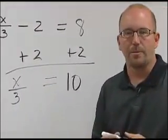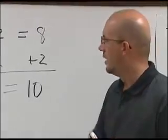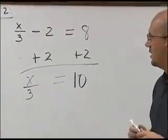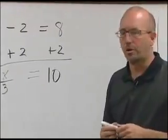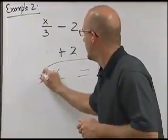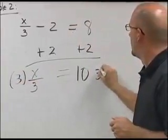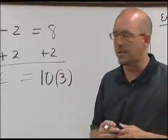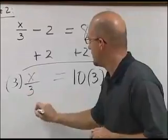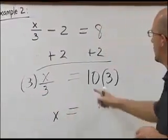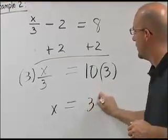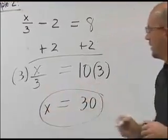Now this looks like a problem that we had from podcast two. Our variable being divided by 3. To undo the division, we will multiply. Have to do it to both sides. This leaves me with x equaling 10 times 3. That's an easy one, 30.